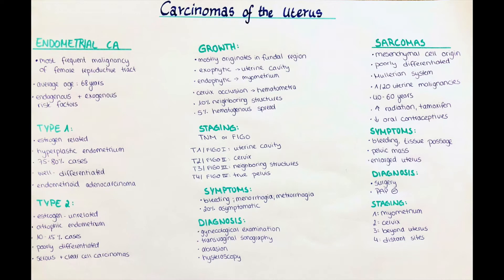Endometrial carcinomas are the most frequent malignant disease of the female reproductive tract. Today we will talk about the different types of carcinomas, risk factors, how to diagnose and treat them, and a few more important points. The average age of diagnosis is 68 years, so in postmenopausal women. In women in the reproductive period or even younger, it is seen rarely but not never.